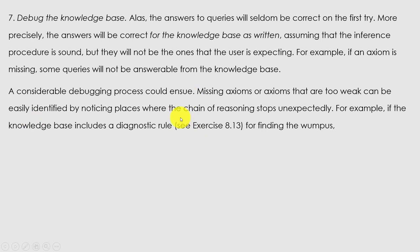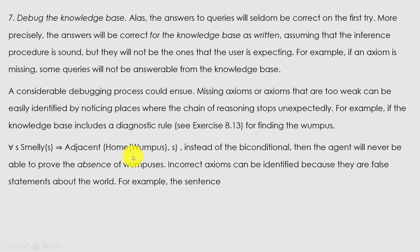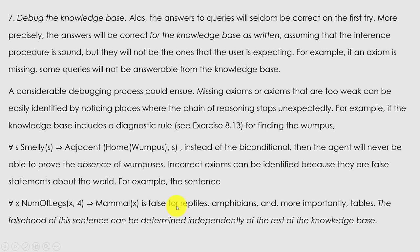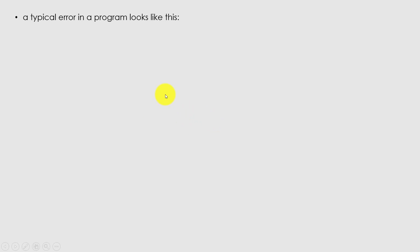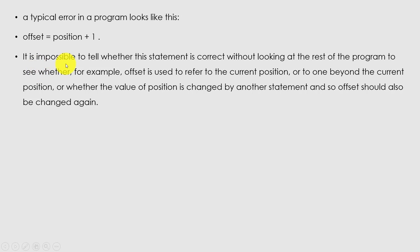Considerable debugging may be needed. Missing axioms or axioms that are too weak can be identified by noticing where the chain of reasoning stops unexpectedly. For example, if the knowledge base includes only a one-directional rule for finding the wumpus rather than a biconditional, the agent will never be able to prove the absence of wumpuses. Incorrect axioms can be identified because they are false statements about the world.